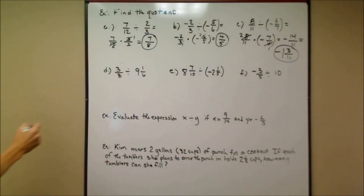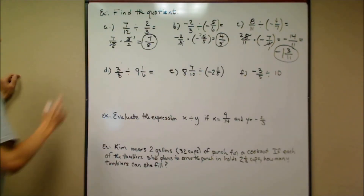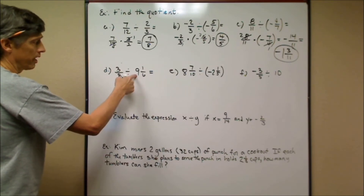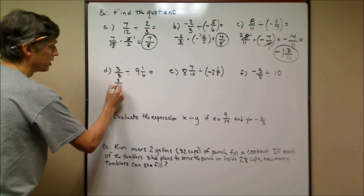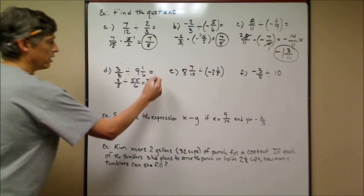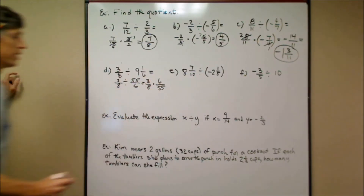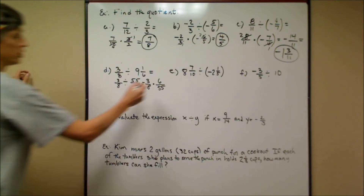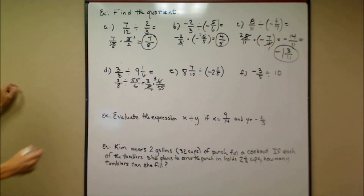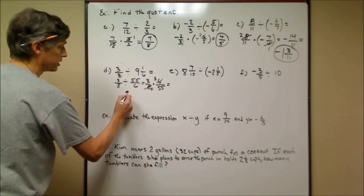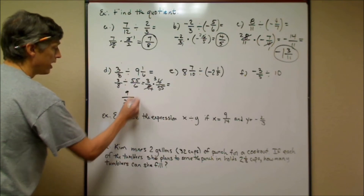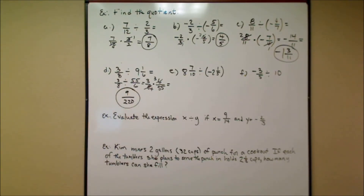The next example includes a mixed number, and both values are positive so the answer should be positive. First, change the mixed number to a fraction: 6 times 9 is 54 plus 1, giving 55/6. So it's 3/8 divided by 55/6, which equals 3/8 times 6/55. A factor of 2 cancels: 2 goes into 6 three times and into 8 four times. Multiplying gives 3 times 3 = 9 on top, and 4 times 55 = 220 on the bottom. The answer is 9/220, already in simplest form.